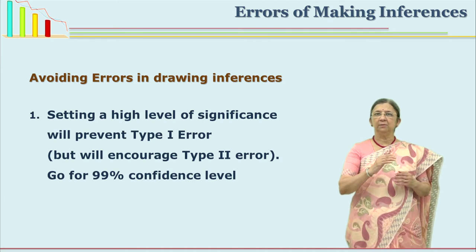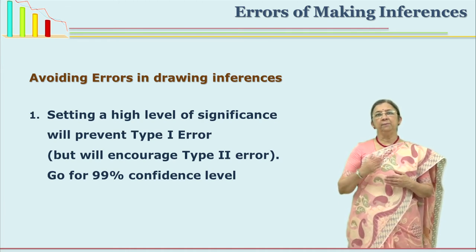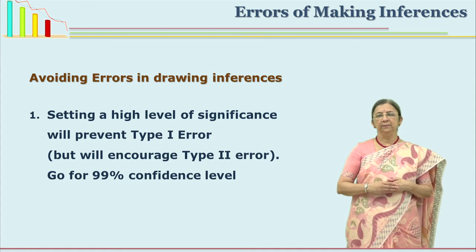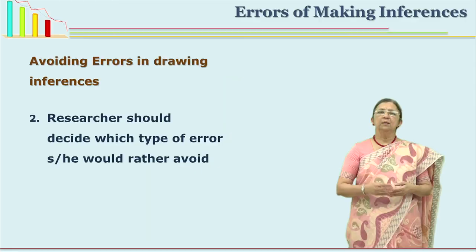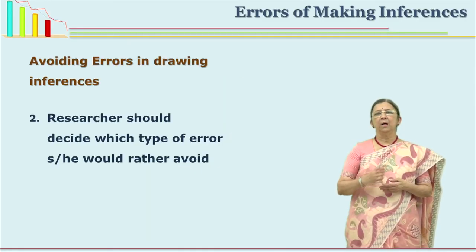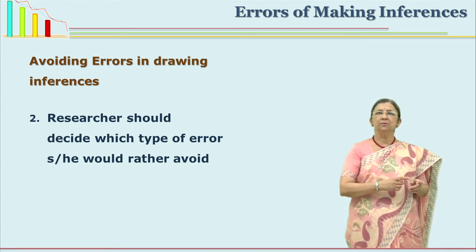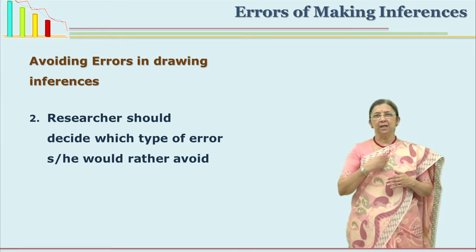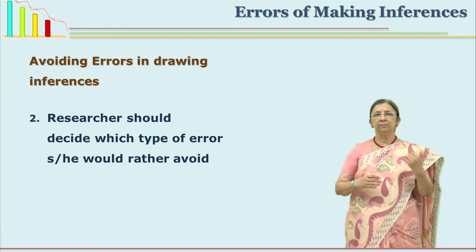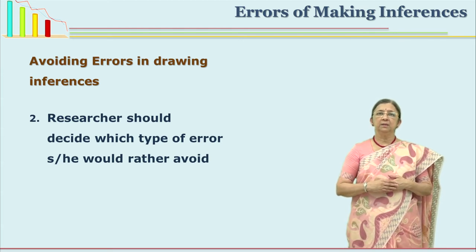But if you put this higher level, then there is a possibility of Type 2 error cropping in — that is, actually it is not significant and you are saying it is significant. If you take care of Type 1 error, there is a danger of falling for Type 2 error, meaning you are retaining the null hypothesis thinking it is not significant when actually it is. So the researcher has to decide how to compromise. Generally Type 2 error is not given so much importance, but Type 1 error is very important and we should try to avoid it as much as possible.